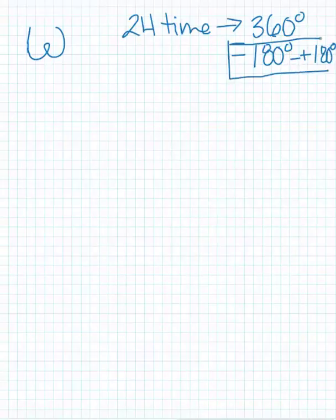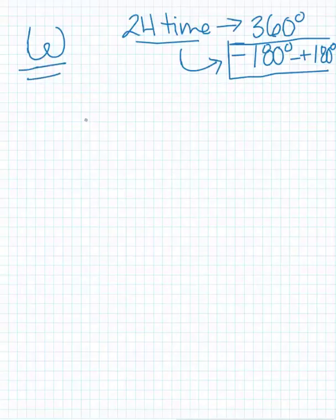And so we're going to figure out a way to convert 24 hours of time to degrees. And those degrees are going to be found as the hour angle.